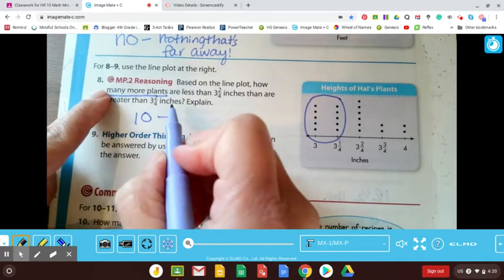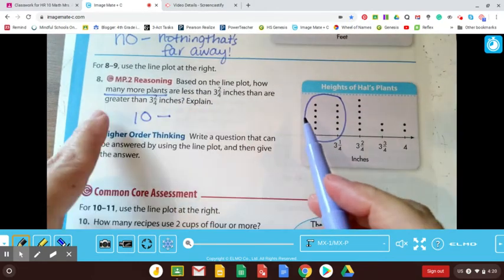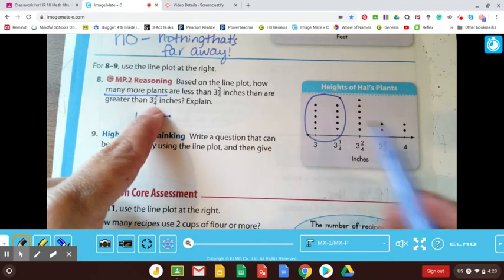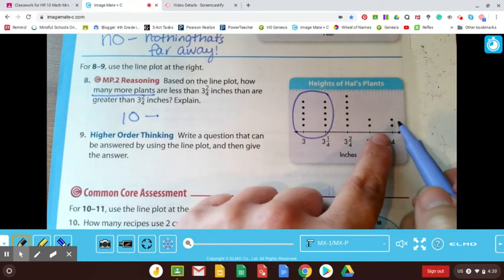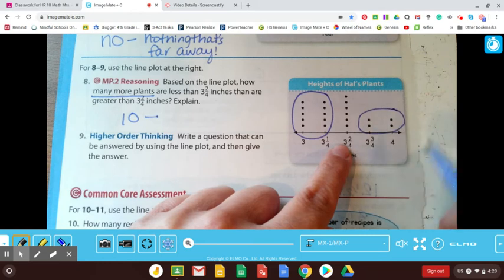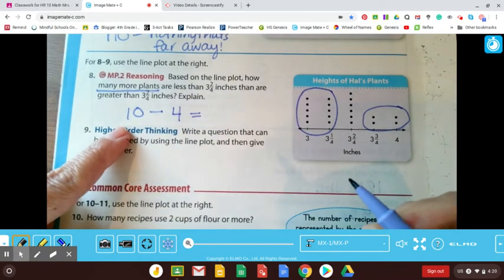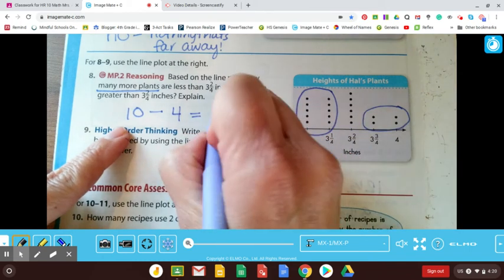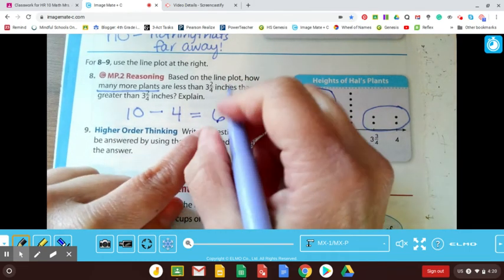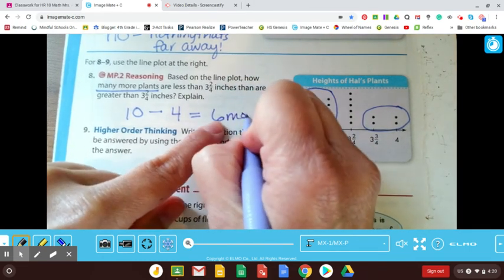Okay. Minus, because how many more? And now we want greater than three and two fourths. So greater than three and two fourths would be these guys. That'd be four. And when you subtract ten minus four, you are going to get the answer of six. So six more plants would be your answer.